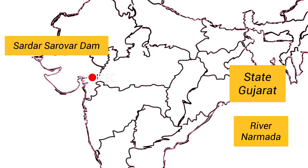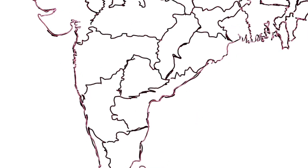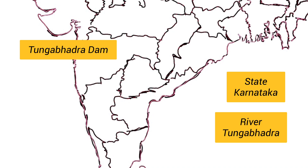The next dam is Sardar Sarovar Dam. It is located in the state of Gujarat. It is the largest dam in the Narmada Valley Project. It is on the river Narmada.